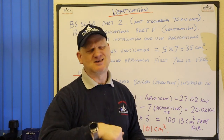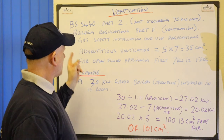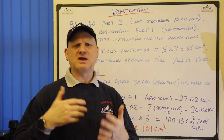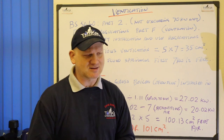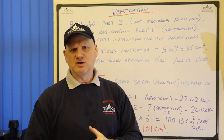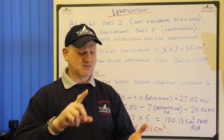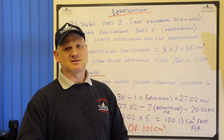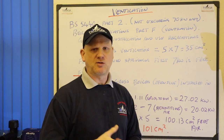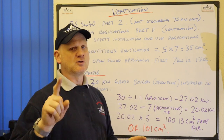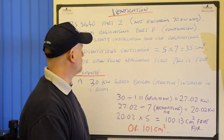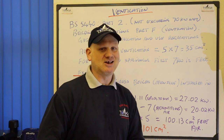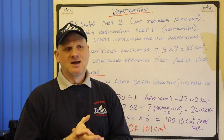They were updated only two years ago, and basically ventilation is split up into different appliances. So we've got open flued appliances, we've got room sealed appliances, and we've got flueless appliances — we're going to look at all three sections. The first one we're going to look at is open flued. Now, adventitious ventilation — what is that?